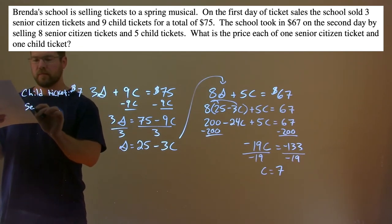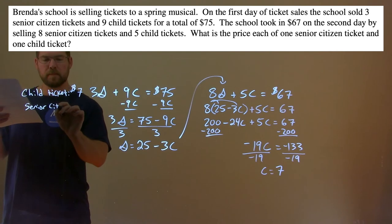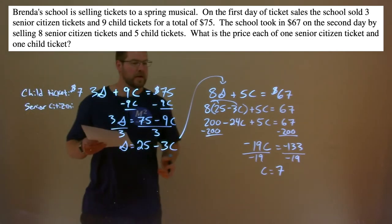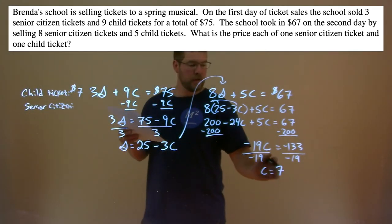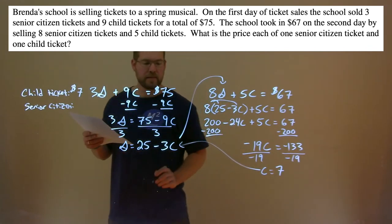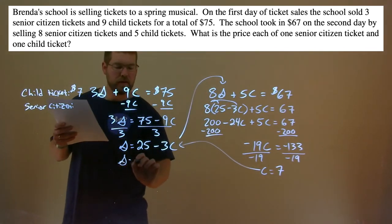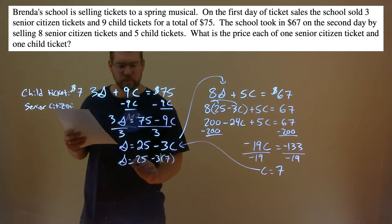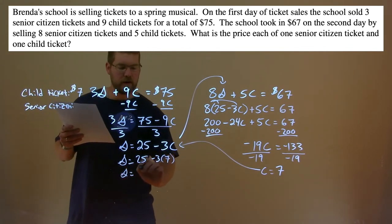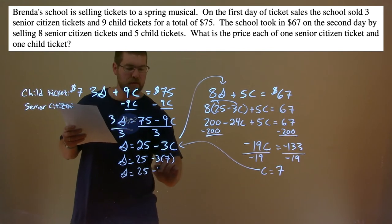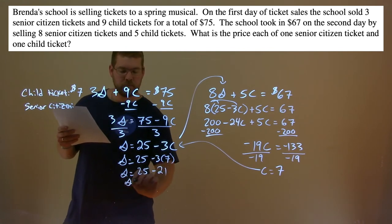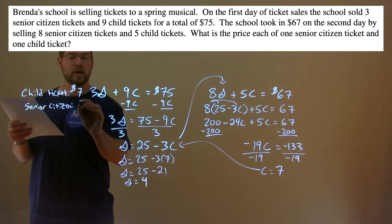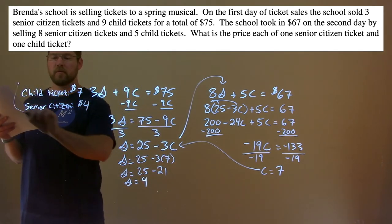Now for the senior citizen ticket: S equals 25 minus 3 times 7. 3 times 7 is 21, and 25 minus 21 is 4. So the price of a senior citizen ticket is $4.